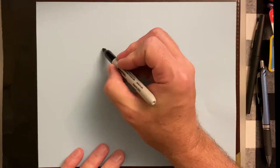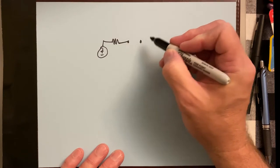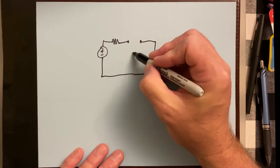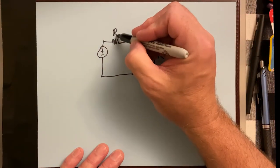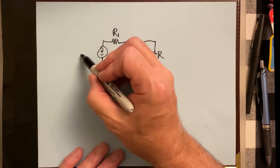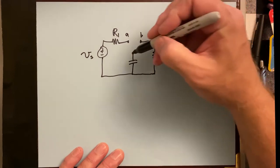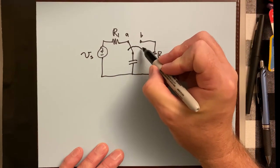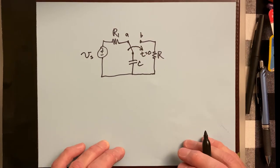We're setting up the natural response for RC circuits. There's a voltage source with a resistor in series and a switch, another resistor, and a capacitor in the center. We'll call one R and the other R1, with the source labeled V_S. The switch has two positions: position A and position B, toggling at T equals zero.